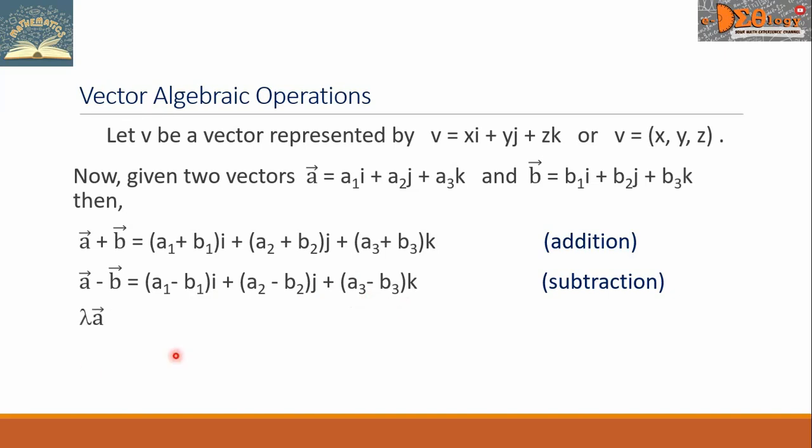Now, let's have this lambda times vector A. Lambda here is a scalar. In this case, the operation is multiplication of a vector by scalar. So, this is equal to lambda a sub 1 i plus lambda a sub 2 j plus lambda a sub 3 k.